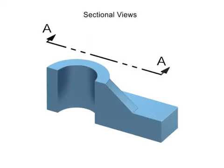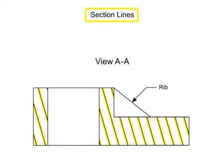Once an object is sectioned, pattern lines called section lines are added to indicate the remaining material. Only the material that has been cut or sectioned is given patterned section lines.